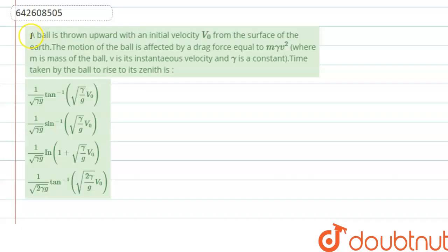Hello everyone, let's start the question. Question says that a ball is thrown upward with an initial velocity v naught from the surface of the earth. The motion of the ball is affected by drag force equal to m gamma v square, where m is the mass of the ball, v is the instantaneous velocity and gamma is constant. Time taken by the ball to rise to its zenith is...